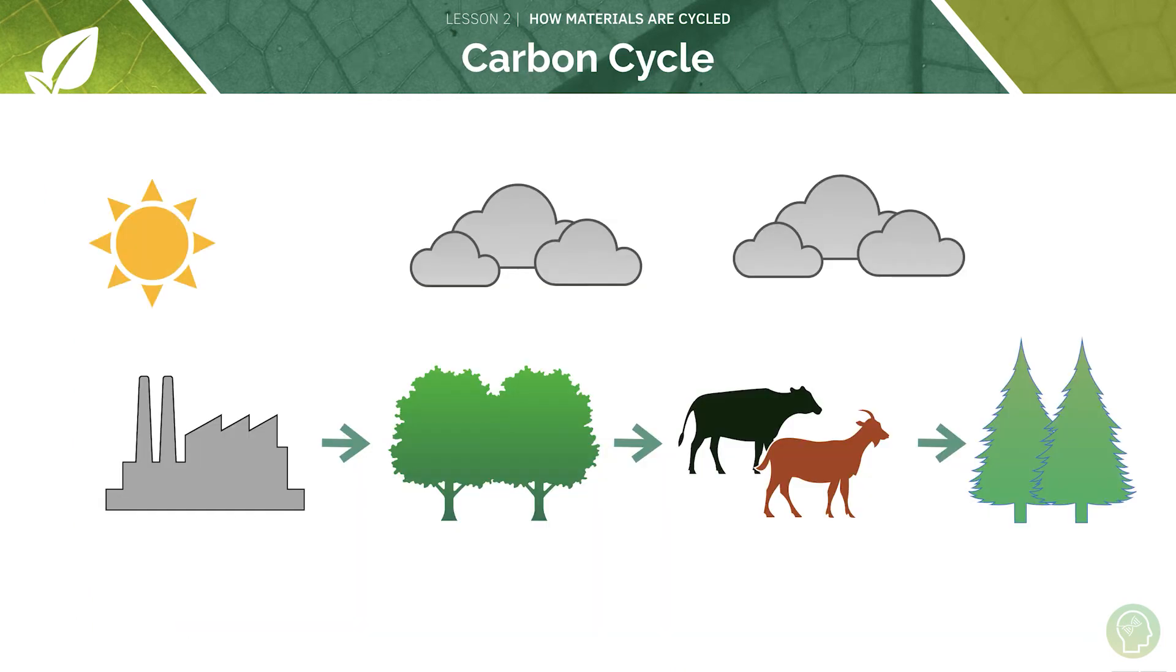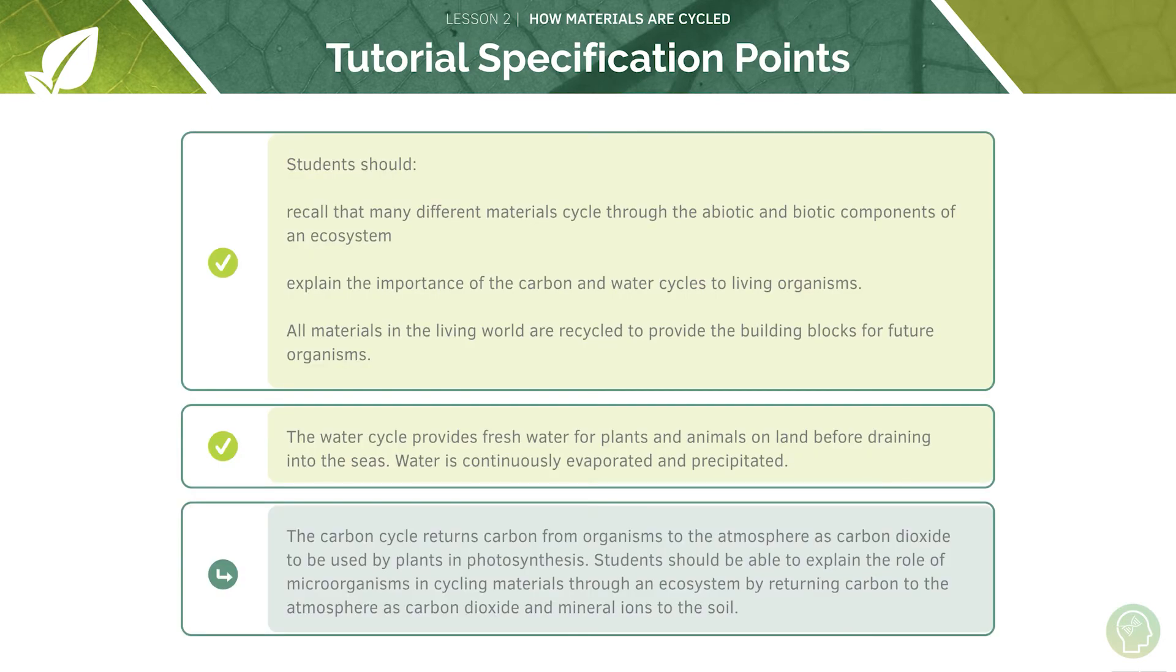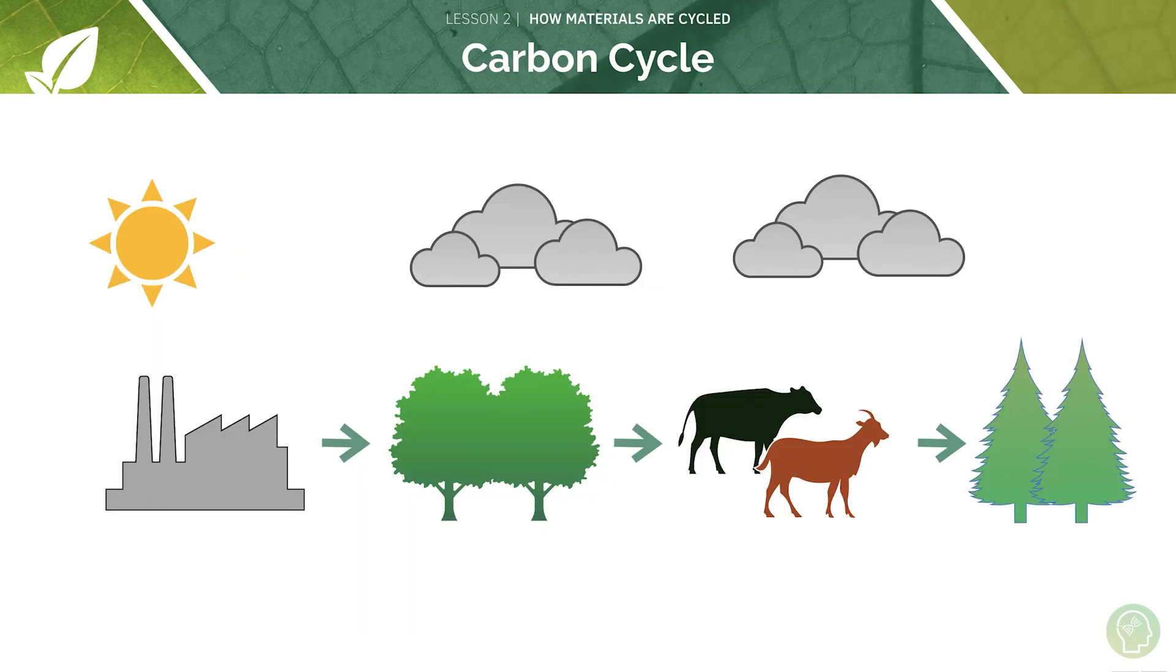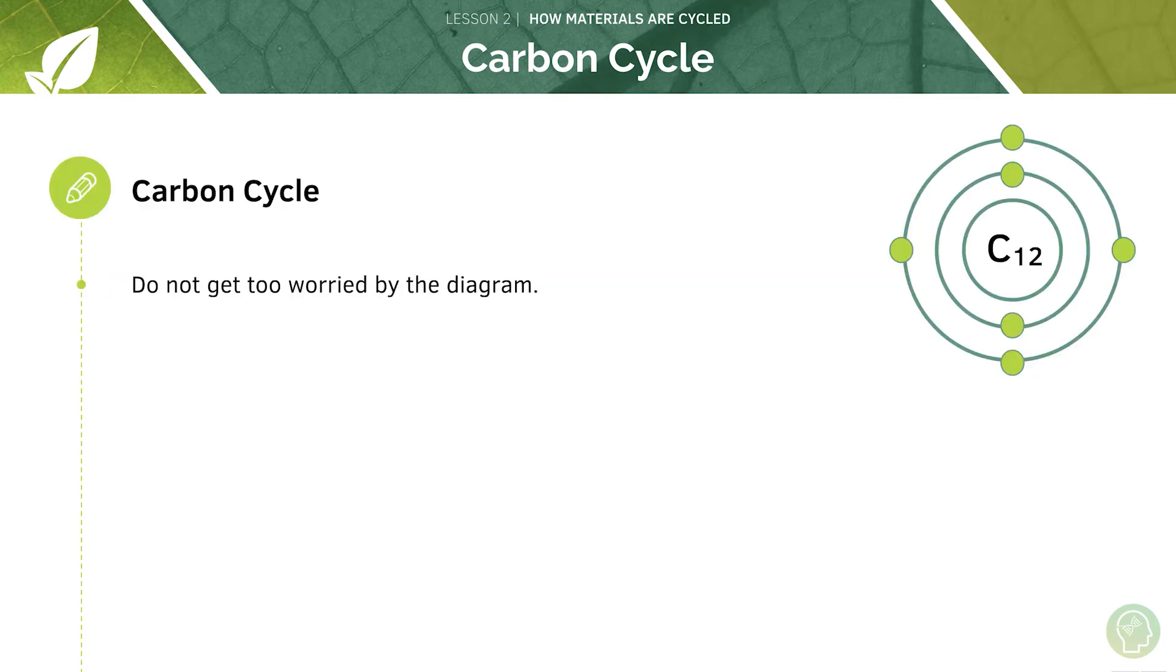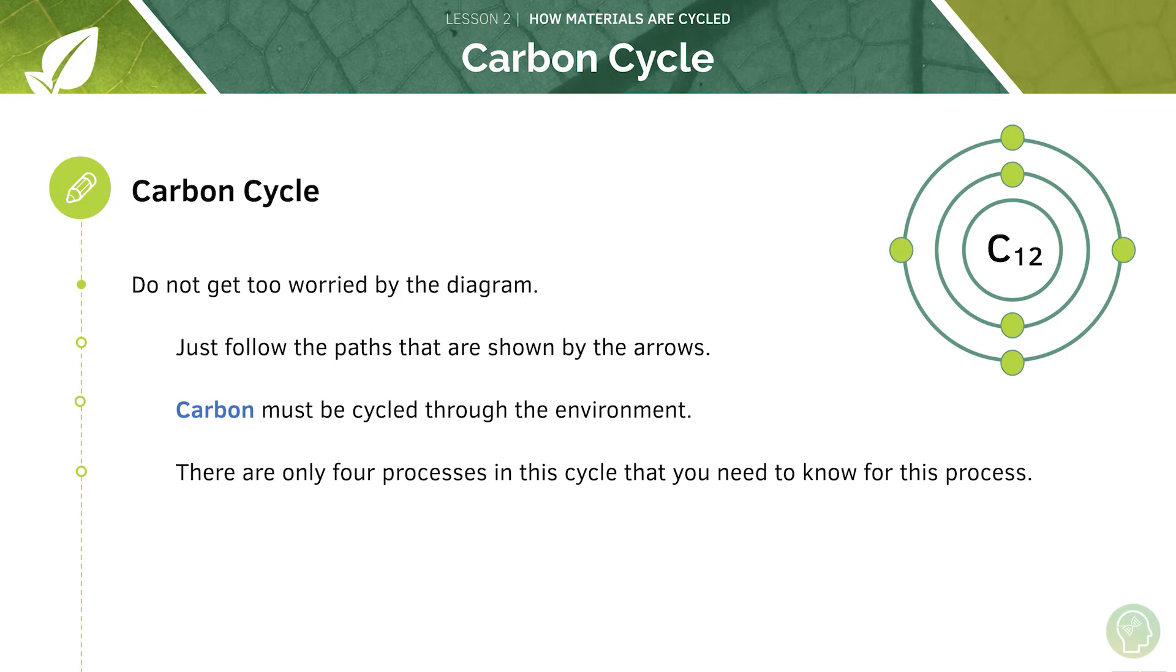So the carbon cycle returns carbon from organisms to the atmosphere as carbon dioxide to be used by plants in photosynthesis. So this diagram will make a lot more sense to you in a second. So just follow the paths shown by the arrows. So we know that carbon has to be cycled through the environment and there are only four processes in this cycle that you need to know.